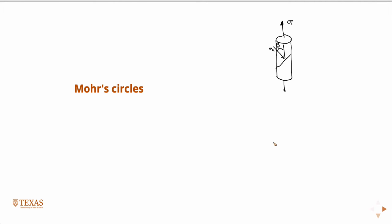The Mohr circles, from essentially geometry, result in a set of equations where, as only a function of the minimum and maximum principal stresses — sigma one and sigma three — and where beta is the angle of the fault, you can determine what the shear and normal stresses are on the fault.